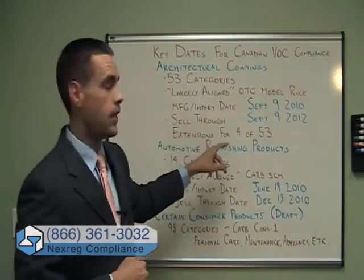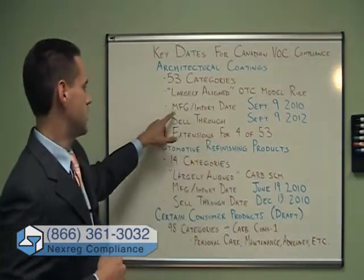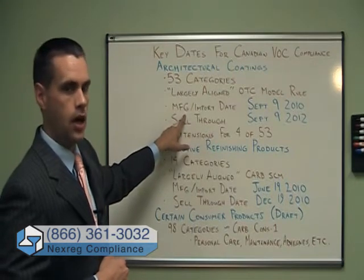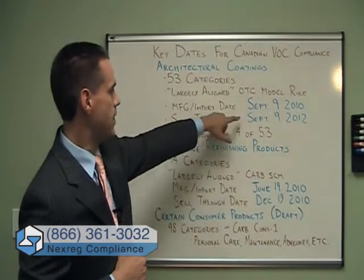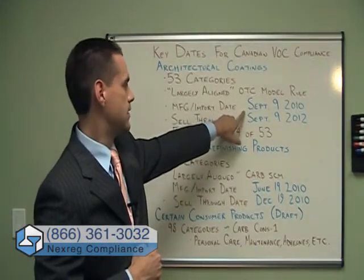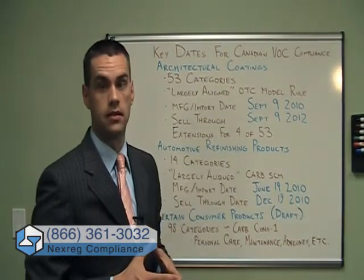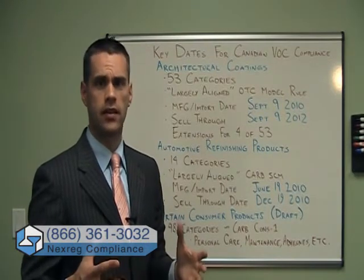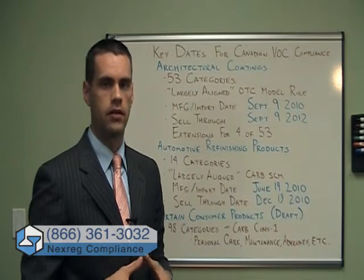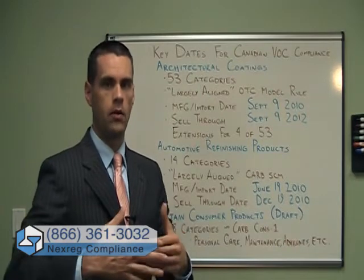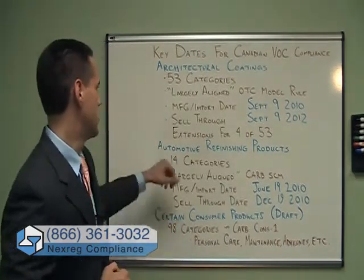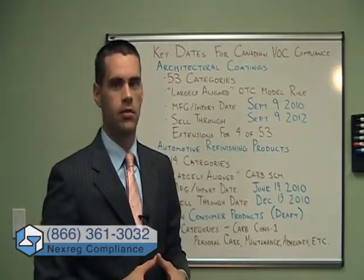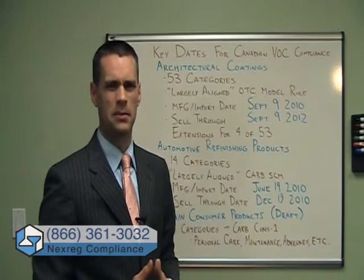There are some implementation dates you need to be aware of. The first is your sort of final date to manufacture or import chemicals before the new limits take place, and that date has already passed — it's September 9th, 2010. But there's a provision that if there are chemicals already on the shelf or you've already got inventory, your sell-through date is September 9th, 2012. This video is being shot in late September 2010, so there's a little bit of time.